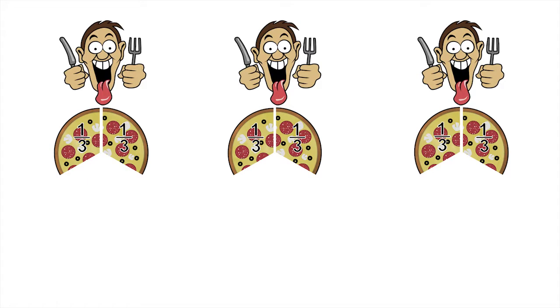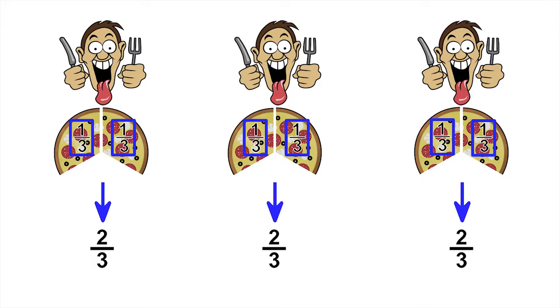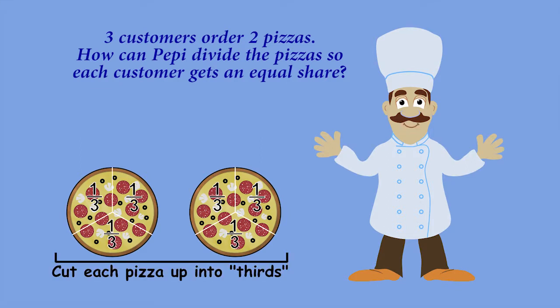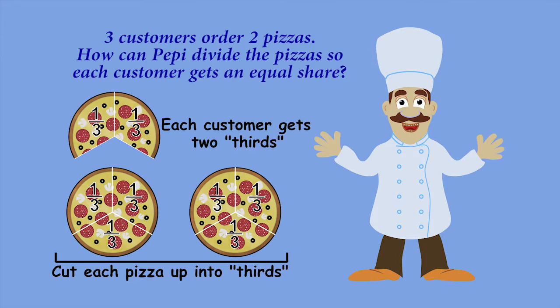Now each customer gets one third of the first pizza and one third of the second pizza, which adds up to a total of two thirds for each person. So I cut each pizza up into thirds and give each customer two thirds. Thank you so much for helping Peppy!